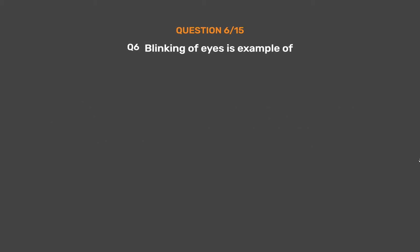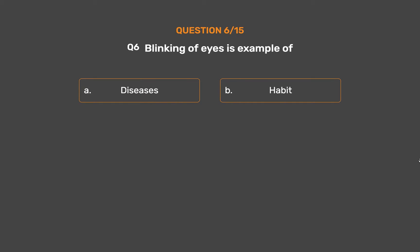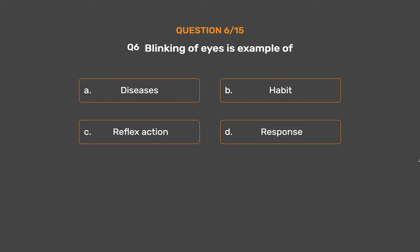Question No. 6. Blinking of eyes is an example of: Option A - Diseases. Option B - Habit. Option C - Reflex action. Option D - Response.